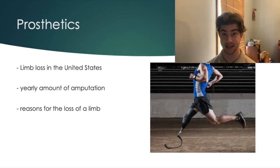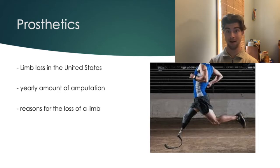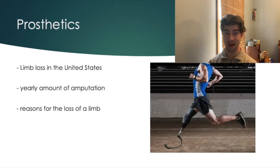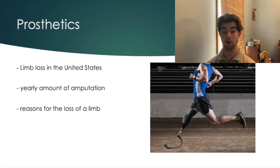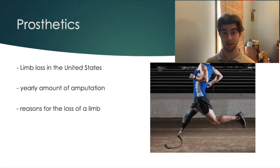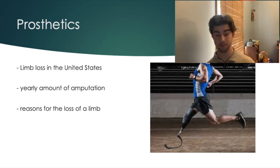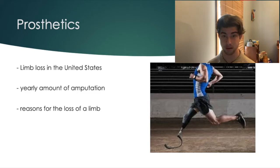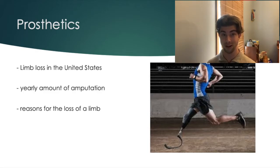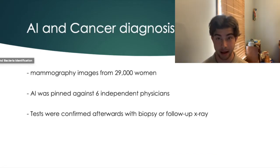The last area for disabled people is prosthetics. Around 2.1 million people in the United States have at least one loss of limb, and roughly 185,000 amputations occur every year. The reasons people live without a limb are vascular diseases at 54%, trauma at 45%, and cancer at less than 2%. Prosthetics play a large role in rehabilitation and allow for greater independence — you don't have to rely on other people as much. Prosthetics are really crucial for social interaction because they increase people's ability to actually meet others and interact socially.